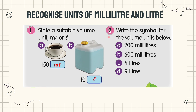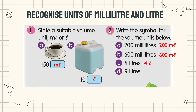Number two: write the symbol for the volume units below. Tulis simbol untuk isi padu yang berikut. A: 200 ml. B: 600 ml. C: 4 liters — 4 L. D: 9 liters — 9 L.